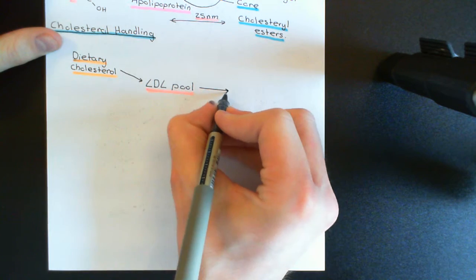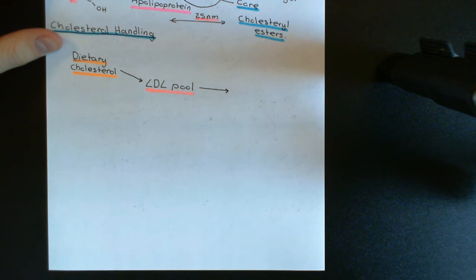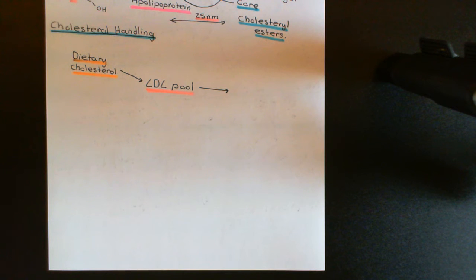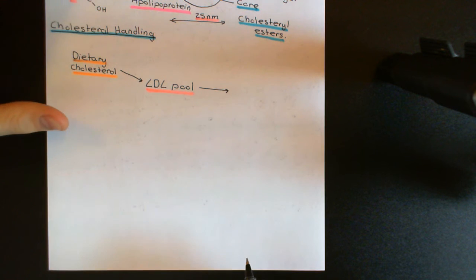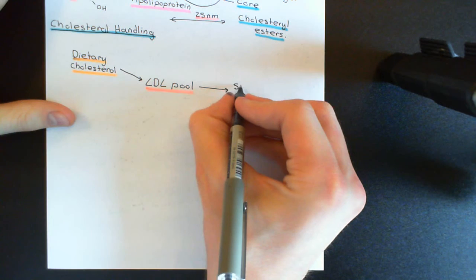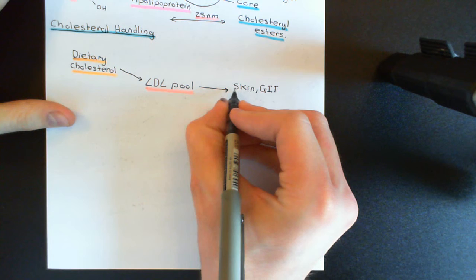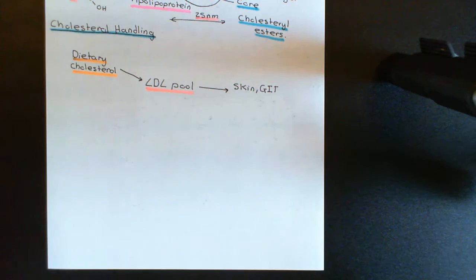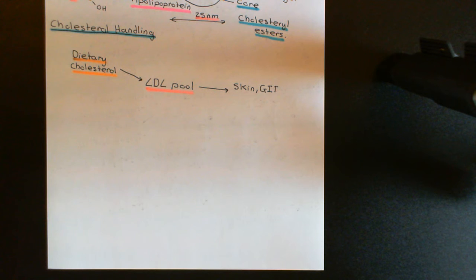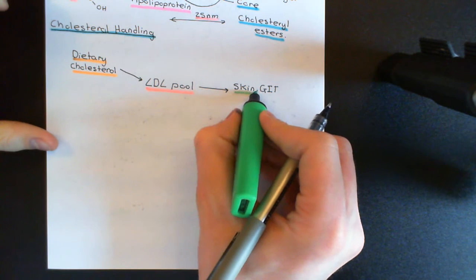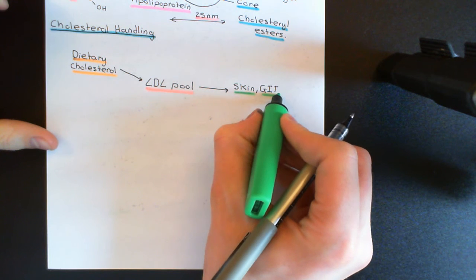One of the uses of cholesterol is that we need it in all of our cell membranes. Where we have cells that are dividing rapidly and producing new cells, we're going to need more cell membrane and therefore need cholesterol. Where do you have rapidly dividing cells within the body? In the skin and in the gastrointestinal tract. The epithelial layers of the skin and the gastrointestinal tract are continuously being reproduced — we're continuously shedding skin cells and gastrointestinal lining cells, and they have to be replaced all the time. There is a large rate of cellular division in the skin and gastrointestinal tract epithelium.